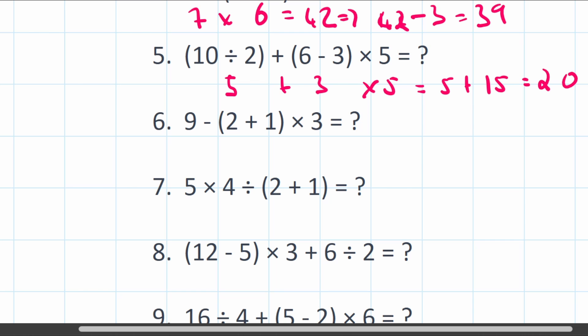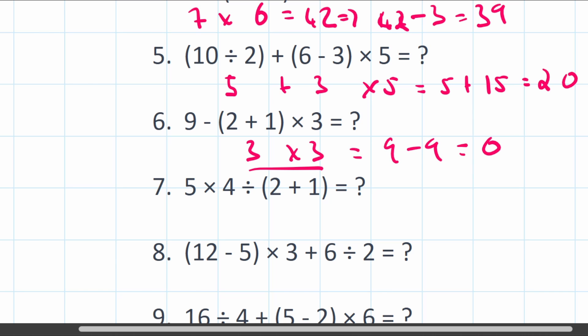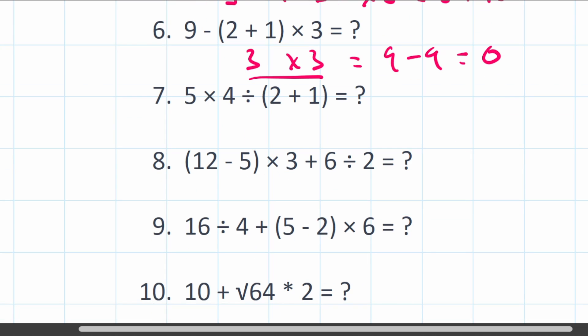Question 6: 9 minus (2 plus 1) multiplied by 3. Brackets first: 2 plus 1 equals 3. Then multiplication: 3 times 3 equals 9. Finally, 9 minus 9 equals 0.